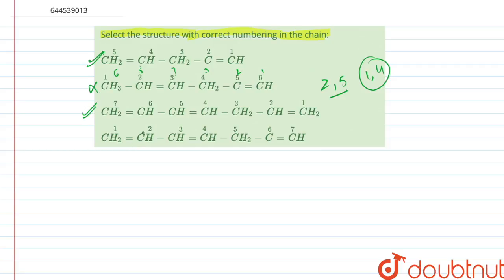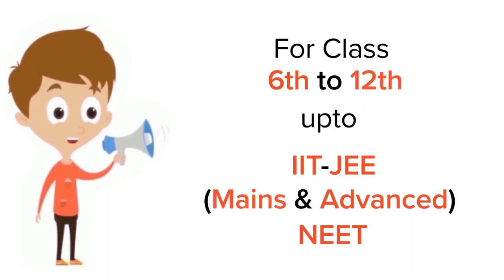Then the last one - in the last one we have 1, 2, 3, 4, and this one is also correct. So the correct numbering in the chain - the correct ones are A, C, and D.